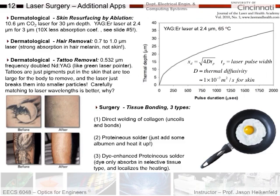Lasers are also used for skin resurfacing. They'll use a CO2 laser at 10.6 microns, which penetrates about 30 microns deep, or an erbium YAG laser at 2.4 microns for a 3 micron depth. The reason it goes less deep is there's a 10 times difference in absorption coefficients — see slide 5 for the absorption profile of human tissue.